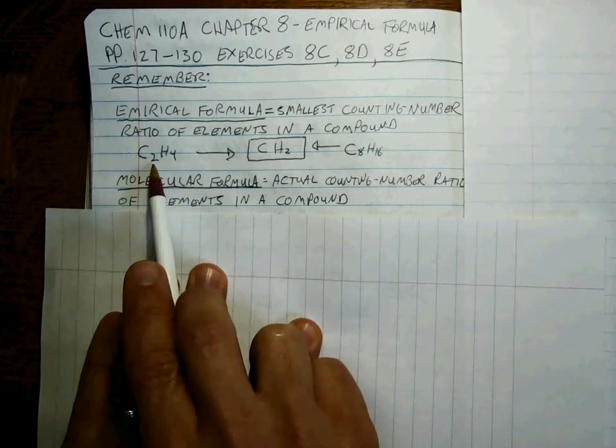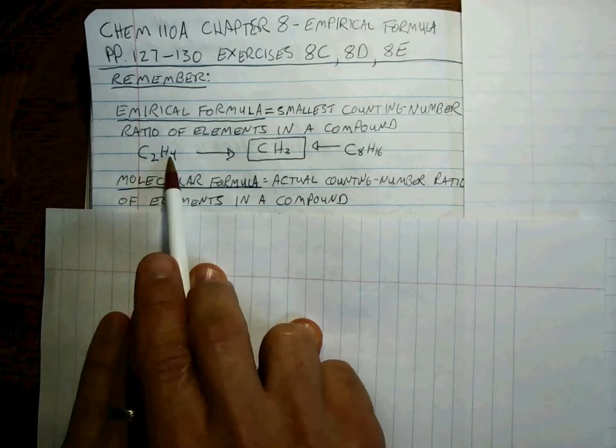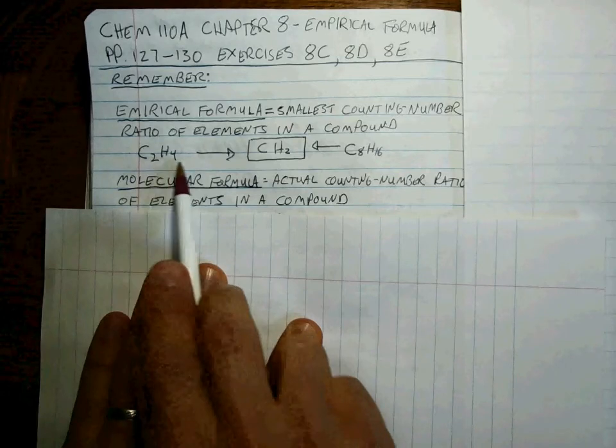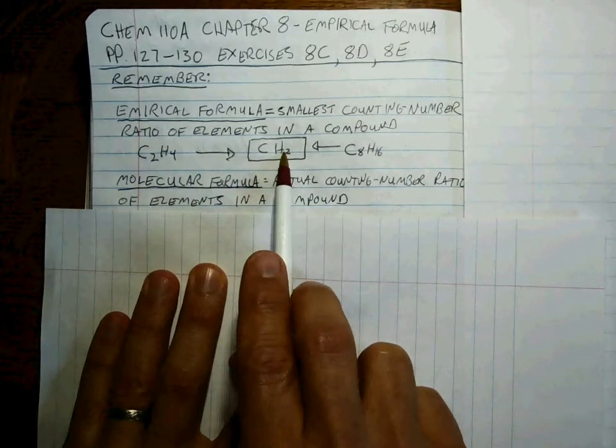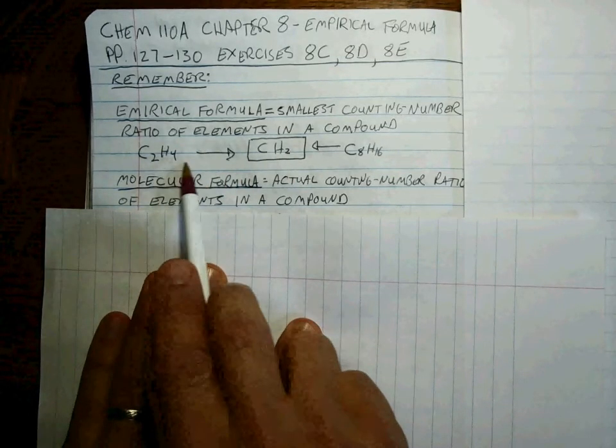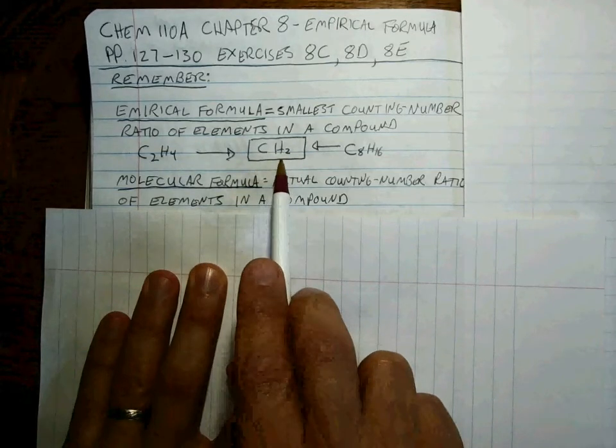So if we look at this molecule, C2H4, the smallest ratio is CH2. Right? Divide both sides by 2. That's the smallest ratio of carbons to hydrogens.